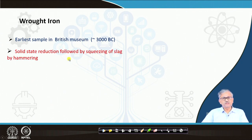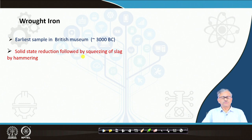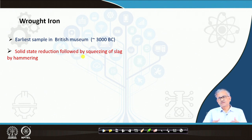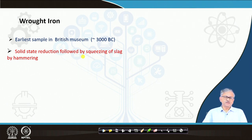That is the solid state reduction, followed by squeezing of the slag by hammering, because iron ore contains a lot of gangue. If you heat up to around 1000°C — which you can do by burning coal even in the presence of cold air — you can directly reduce the iron ore. The temperature was around 1000–1100°C maximum, which could be attained by natural draft.